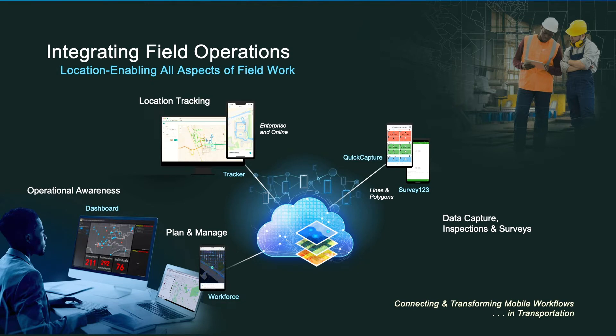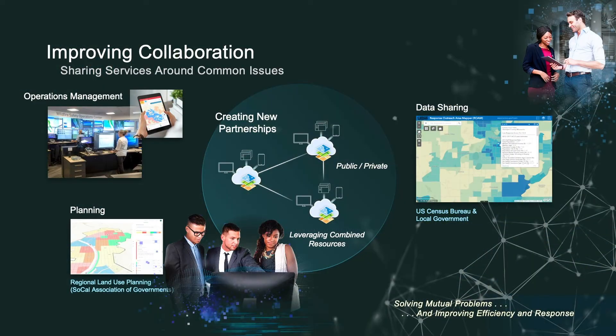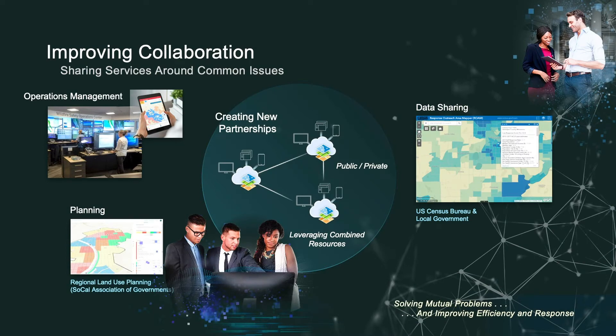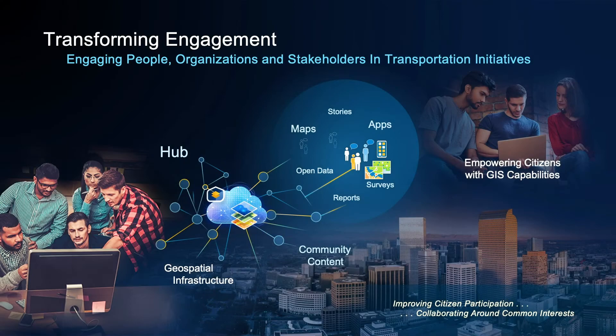GIS is increasingly empowering field operations with apps. From the office you can manage field workers, and field workers can collect data and put it directly back into the database in real time. They can be tracked from a safety and productivity perspective. This new infrastructure pattern is built on web services, so you can bring in data from another operation, integrate it dynamically, mash it up, and republish it — it's almost magic. Big agencies like the Census Bureau have used it extensively, as well as in planning and operations management. This is transforming organizations.